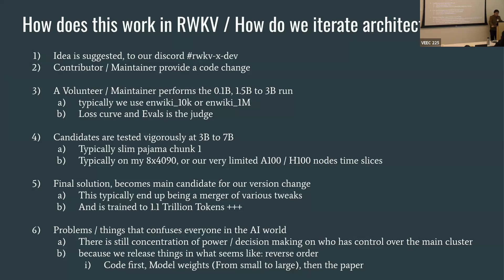The problems about this process confuse everyone in the AI world. Problem number one: our process follows a very collaborative, decentralized nature, yet there is still concentration of power and decision making over who controls the main cluster — that would be the original creator and me, who have access to our respective clusters. The other thing that confuses everyone is that we release things in what seems like the reverse order to the AI world norm. We first have the code change, then we make the model weights from small to large, then we start writing the paper. The norm in AI seems to be to release the paper first, then everything else. So people constantly ask why we have the model and no paper yet — for example, we don't have the V5 and V6 papers out yet, but we already have the weights in public. But that's because this is done completely collaboratively in public; if you ask me about the current training process, I can point you to a checkpoint on Hugging Face where you can download and play with it.